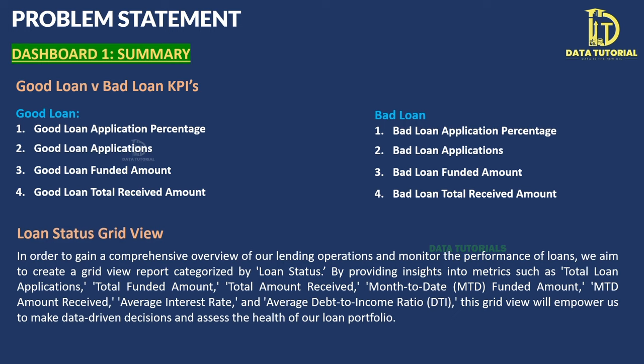Now a quick data walkthrough: the dataset is a financial loan (bank loan) dataset with 38,577 rows and 24 fields. Fields include: ID (loan ID, the primary key), address state, application type (individual or joint), employee length, employee title, grade, home ownership, issue date, last credit pull date, last payment date, and loan status.